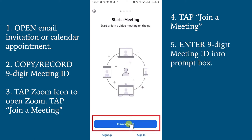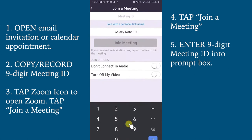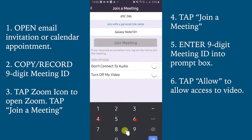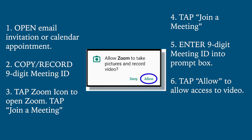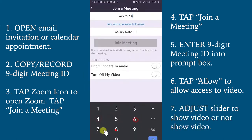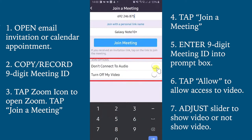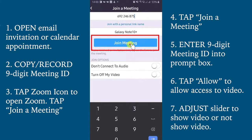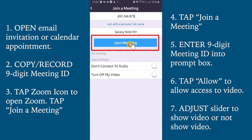In the prompt box given, type in the nine-digit meeting ID you recorded from the invitation, and in the name prompt box, type your name, and then tap Join Meeting. If you are prompted with a screen asking for permission to take pictures and record video, tap Allow. In the video preview screen, adjust the slider appropriately if you do or do not want a video preview to appear when you join a Zoom meeting. Tap either Join with Video or Join without Video. After this, you will be connected to the meeting.